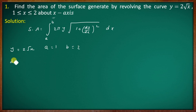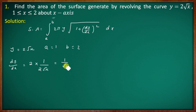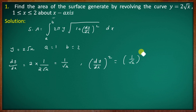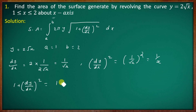The derivative dy/dx of y = 2√x equals 1/√x. Then 1 + (dy/dx)² equals 1 + 1/x, and combining gives (x + 1)/x.